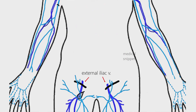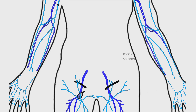Now let's concentrate on the external iliac veins. The external iliac vein is the continuation of the common femoral vein after it crosses underneath the inguinal ligament. The tributaries of the external iliac vein are inferior epigastric, deep circumflex iliac veins, and pubic veins.